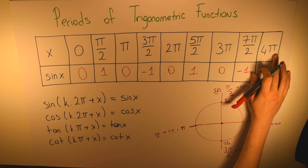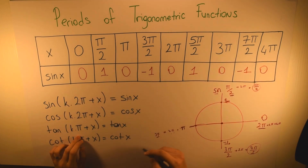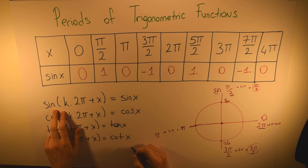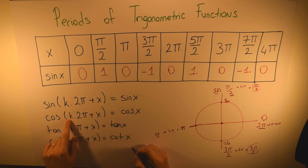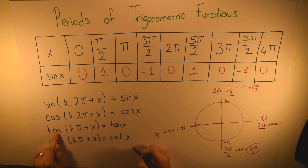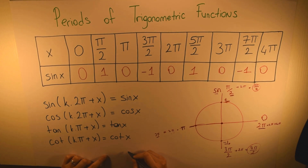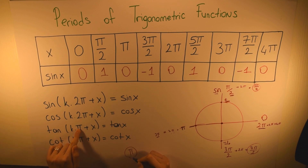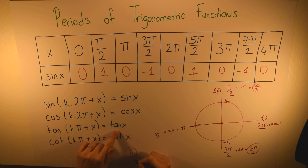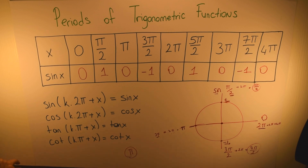The specific formulas for this topic are: sin(k·2π + x) = sin x, and cosine(k·2π + x) = cosine x. For tangent and cotangent, the period is π, not 2π. So: tangent(k·π + x) = tangent x, and cotangent(k·π + x) = cotangent x.